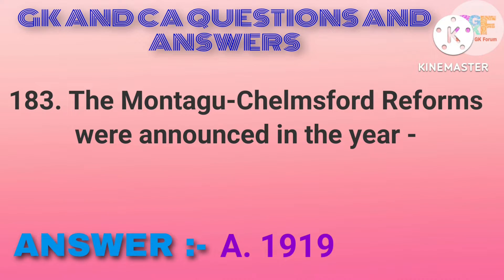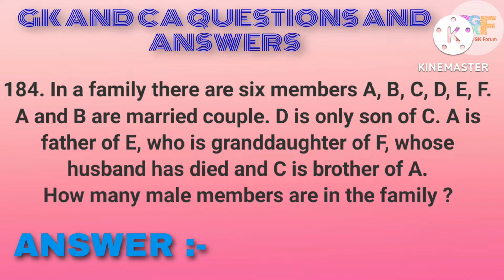In a family, there are 6 members A, B, C, D, E, F. A and B are a married couple. D is the only son of C. A is the father of E, who is the granddaughter of F, whose husband has died, and C is the brother of A. How many male members are in the family? Option A: 3.